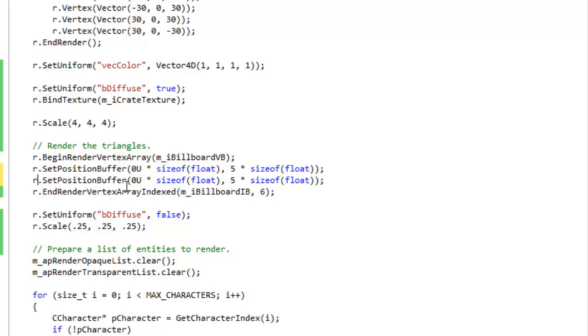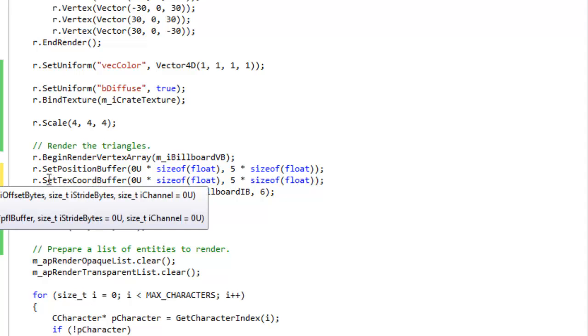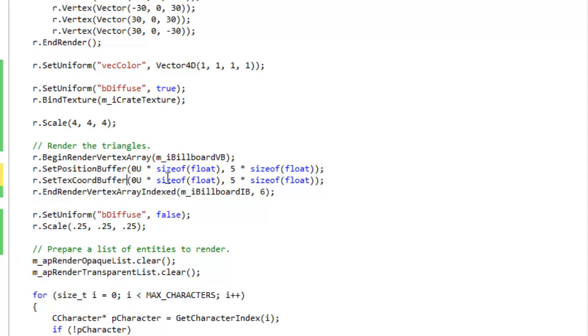And so I specified a crate texture to use, which was loaded at another point in the program. And then we have to tell it about the texture coordinates that we put in this buffer. So there's a new function for that, set texture coordinate buffer, and it takes two parameters.